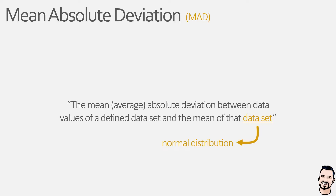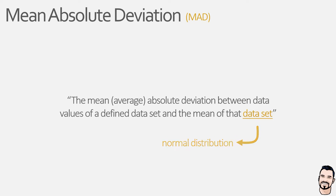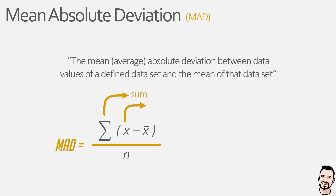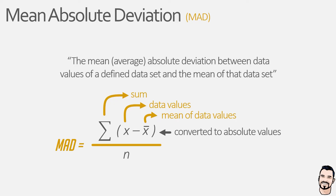Now let's look at how we calculate the mean absolute deviation using the equation. The mean absolute deviation is the sum of each data value minus the mean of the data values — essentially the deviation from the mean — converted to absolute values, divided by the number of data values used. To help make sense of this equation, we're going to calculate the mean absolute deviation using two example data sets.